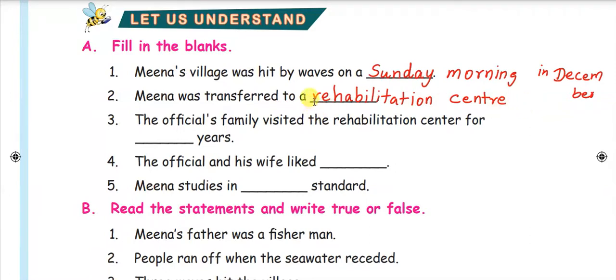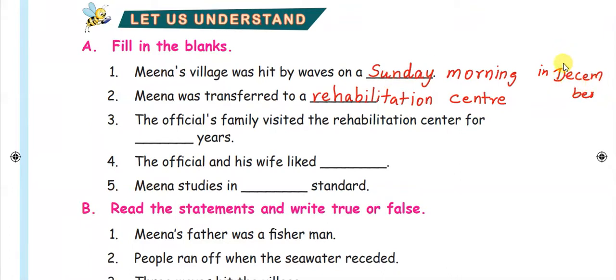Here, R.C. is written in small letters. The first answer is Sunday — December is a capital letter because it is a proper noun. Sunday and December are proper nouns, so capital letters are used. Small letters are also noted here. Capital letters are used for proper nouns.